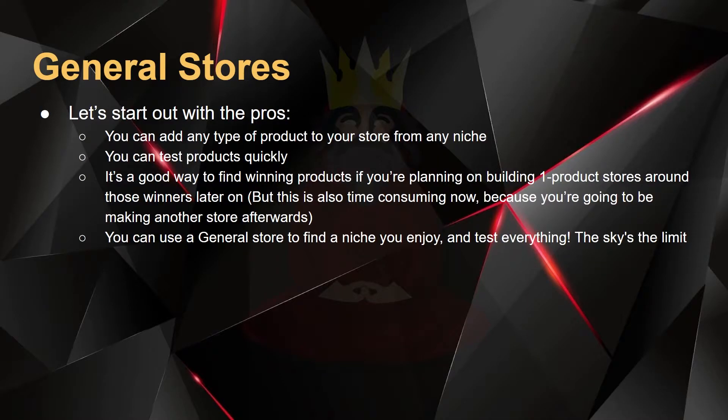But this is also time consuming because you're going to be making a second store after you find that winner, which isn't ideal. You can use a general store to find a niche you enjoy and test everything. The sky's the limit — you could test unicorn toys, kids toys, mother products, gym wear, all of this stuff in a general store.